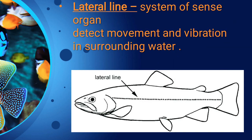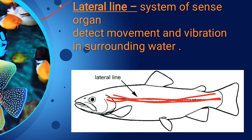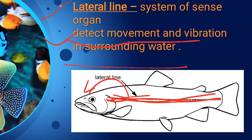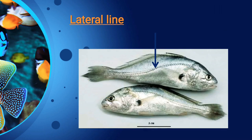The lateral line is a sense organ found in fish — it is a variation unique to fish and other vertebrate animals. Its main function is to detect movement or vibration in the surrounding water and transmit those activities to the nervous system. This is the function of the lateral line, which is very important. You can see the lateral line on this diagram — this is the lateral line of the fish. They detect movement and vibration in surrounding water.